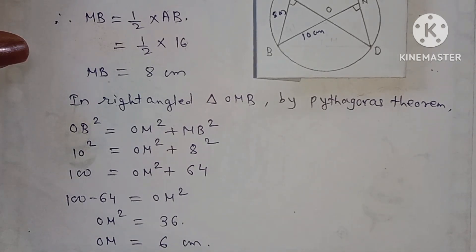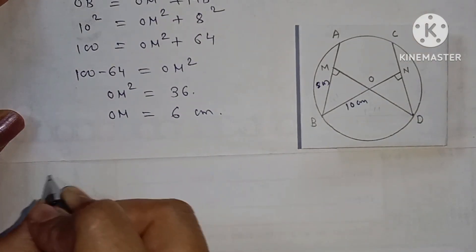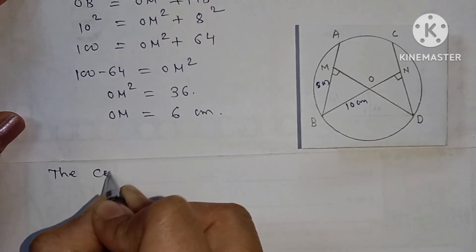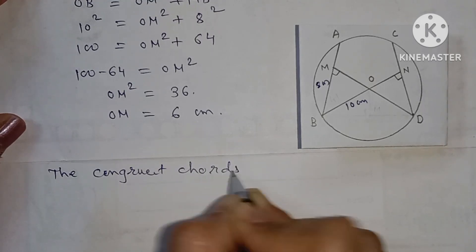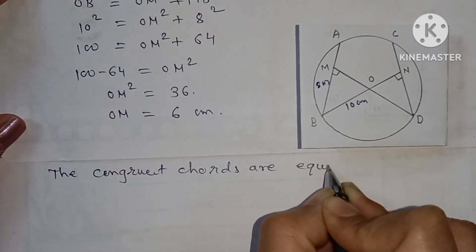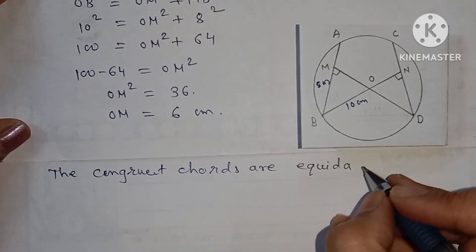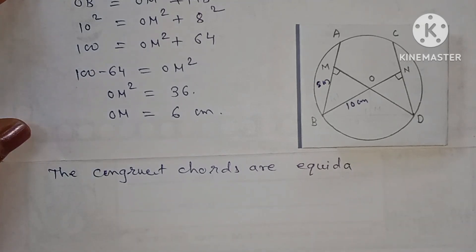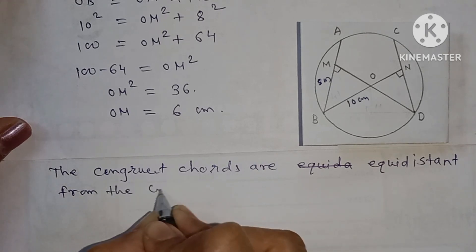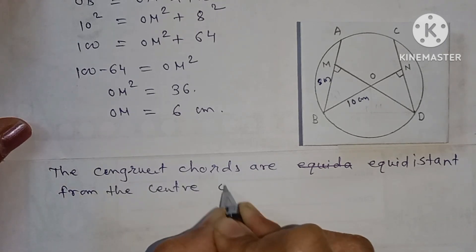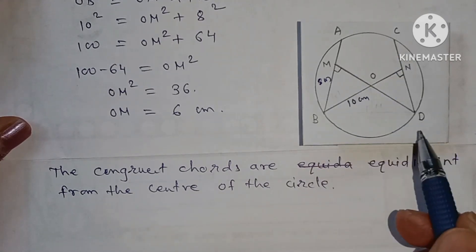OM = 6 centimeters. These two are congruent chords, and congruent chords are equidistant from the center of the circle.